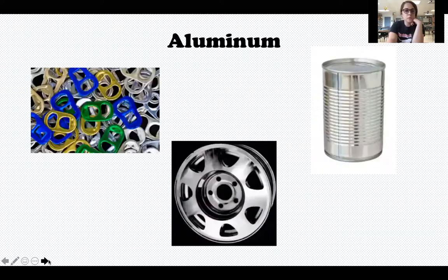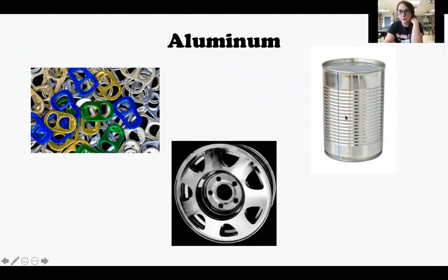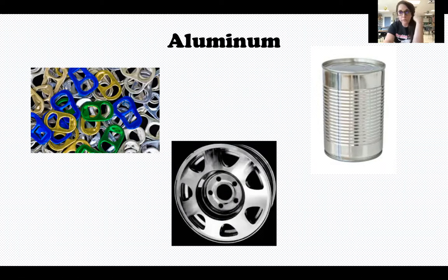Let's start with aluminum. Aluminum is a pretty common one. Soda cans and the little pull tabs on top of them are made from aluminum. The hubcaps or wheels of a car are aluminum. The cans that canned food comes in are aluminum. Also, aluminum foil that we use is made from aluminum.